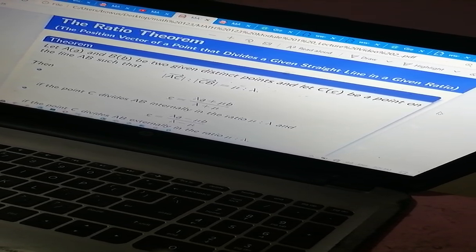Then, if this condition is satisfied, then the point C or the position vector C is given as that expression: lambda A plus mu B over lambda plus mu.